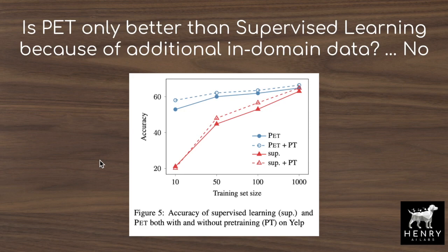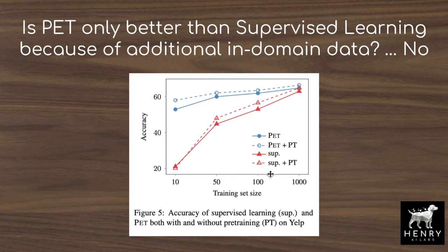Being skeptical of this algorithm, one might argue the performance gain is only because more unlabeled in-domain data D is being used. The paper shows that PET actually benefits a little more from in-domain pre-training than supervised learning does. However, the current state of the algorithm seems to saturate gains at 1,000 labels for Yelp review classification, possibly due to not having enough patterns, not aggregating across a wider set of language models, or limitations in the verbalizer search — leaving a lot of room for exploration.